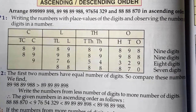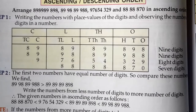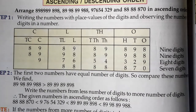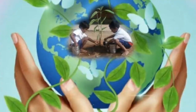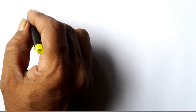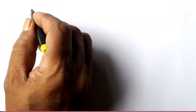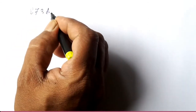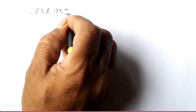Now we will do the next problem: arrange the numbers in ascending order. The first number is 8736879 — wait, let me write the numbers. The first number is 8736879 52, the second number begins with 8, 7, 3, 5, 9, 5, 2.